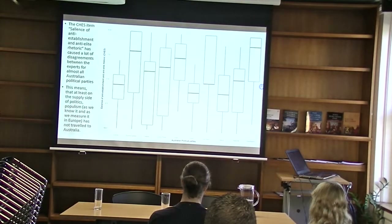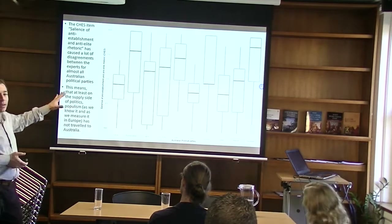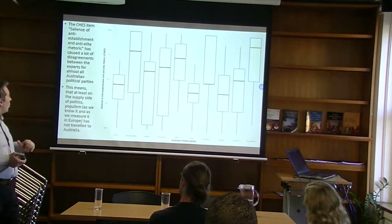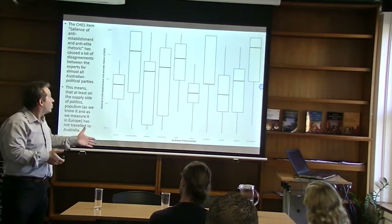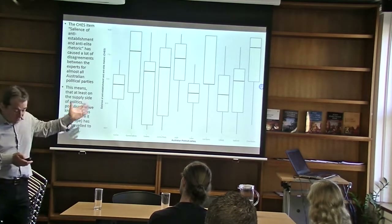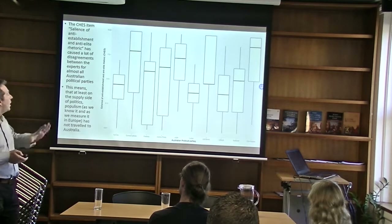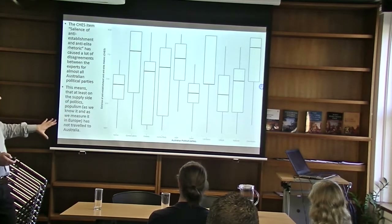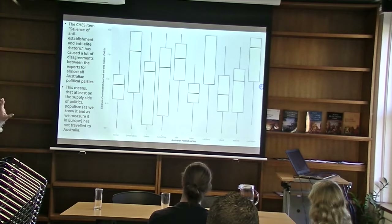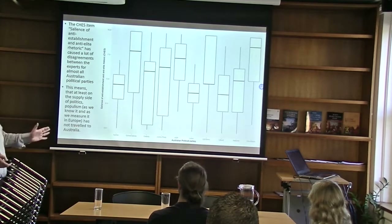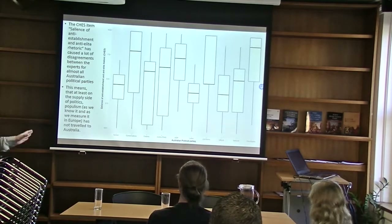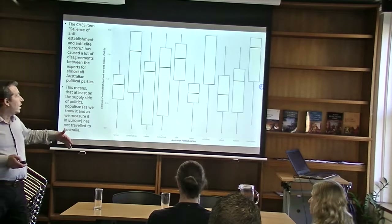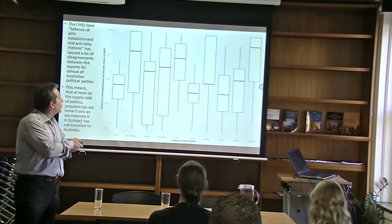This is very clear evidence for deciding which items are not good and should be dropped when creating a political map. We can see that, at least on the supply side of politics in Australia, populism as we know it and measure it in Europe does not seem to be present — it has not travelled to Australia.